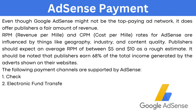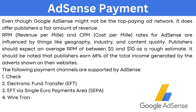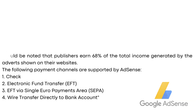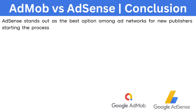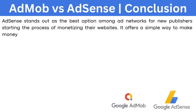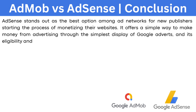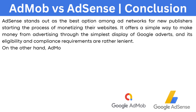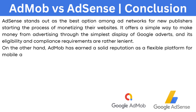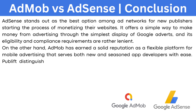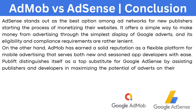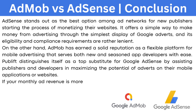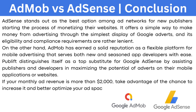AdSense payment channels include check, electronic fund transfer (EFT via single year repayment area), and wire transfer directly to bank accounts. AdMob vs. AdSense conclusion: AdSense stands out as the best option among ad networks for new publishers starting the process of monetizing their websites. It offers a simple way to make money from advertising with lenient eligibility and compliance requirements. On the other hand, AdMob has earned a solid reputation as a flexible platform for mobile advertising that serves both new and seasoned app developers. If your monthly ad revenue is more than $2,000, take advantage of the chance to increase it and better optimize your ad space. I hope this video was helpful — thank you so much for watching.